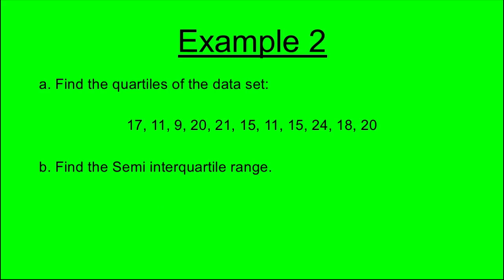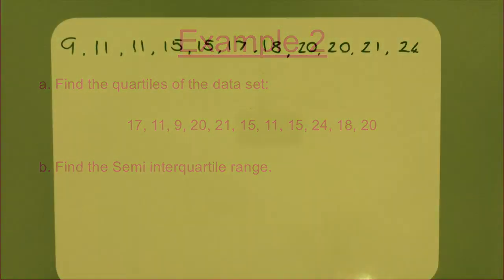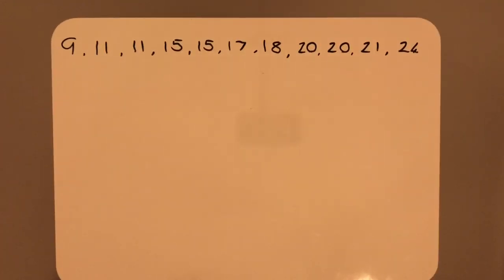Example 2. Part A. Find the quartiles of the dataset. Part B. Find the semi-interquartile range. In Example 2, we are asked to find the quartiles of the dataset. From the board, you should see that I have placed the data in order to allow me to find my quartiles.